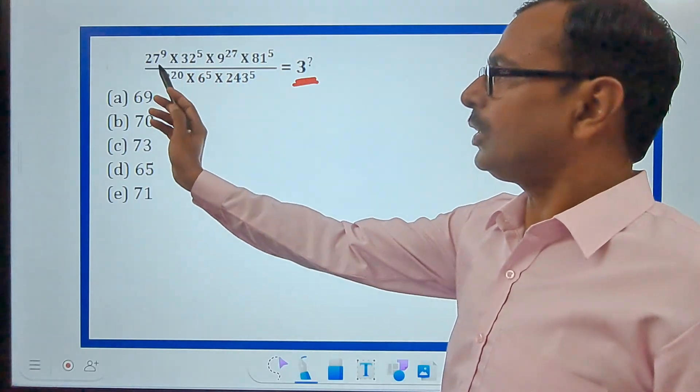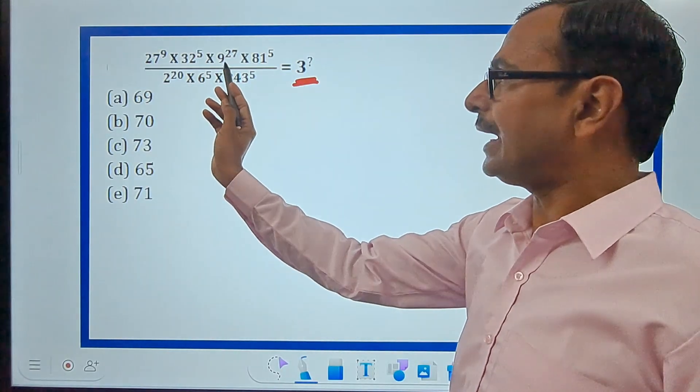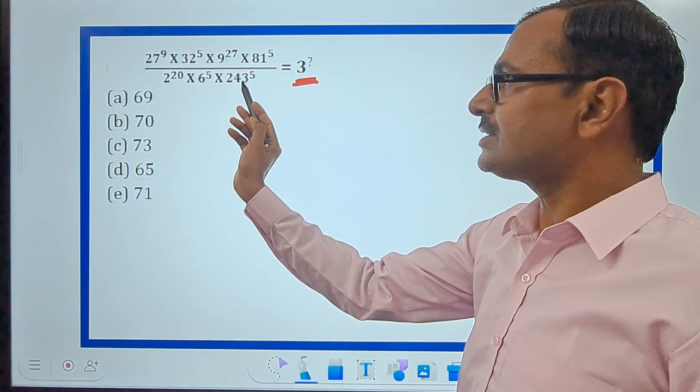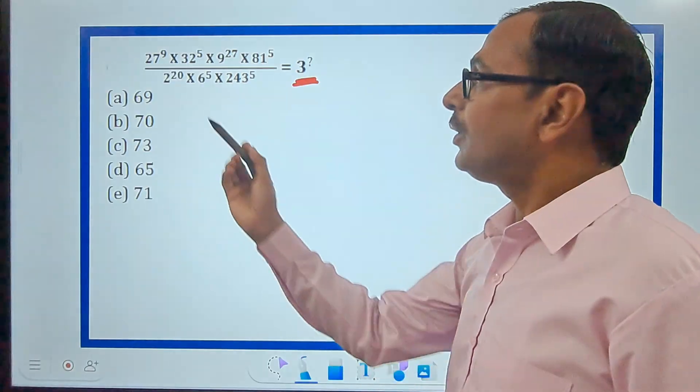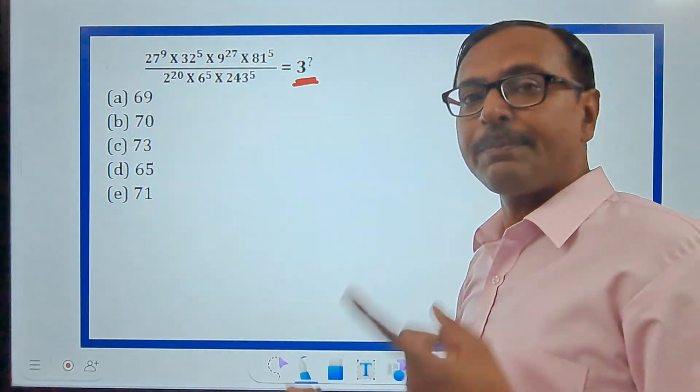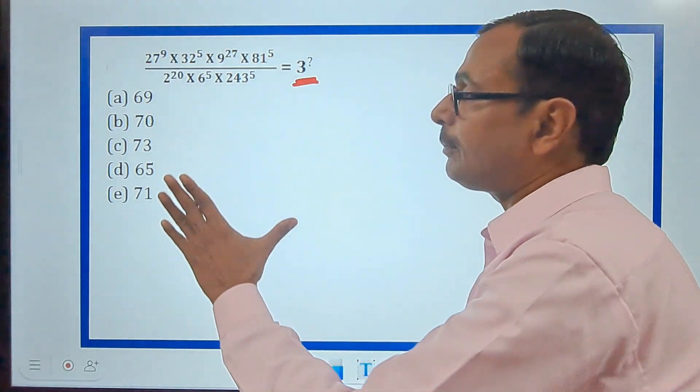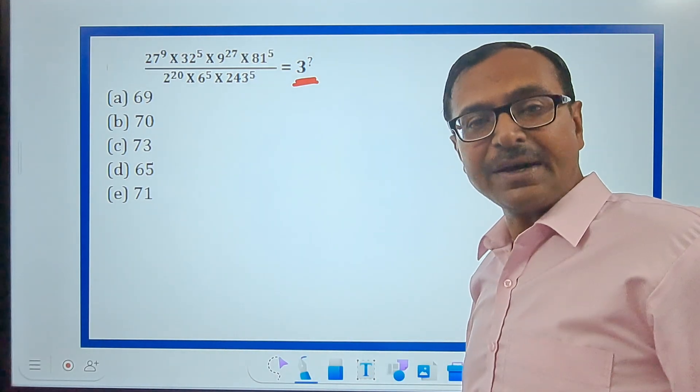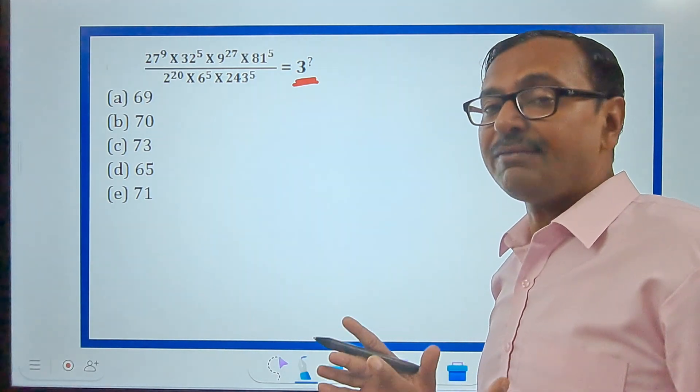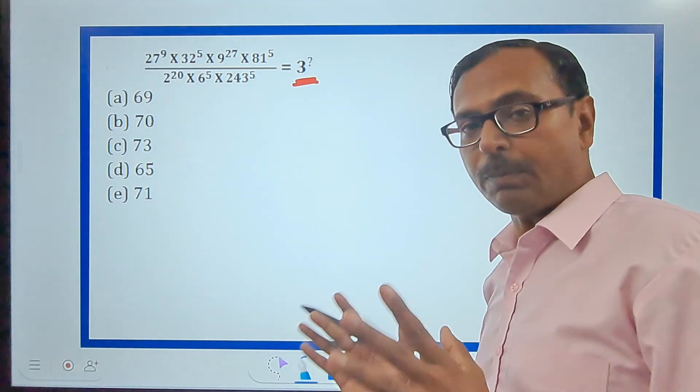We have powers of 2 also. Let's convert all these: 27, 32, 9, 81, 6, 243—they're not prime numbers, so we can resolve them into factors. Only this 2 base is prime; rest are composite numbers. I'll break all those into prime factors first so we have a simplified version of the problem.